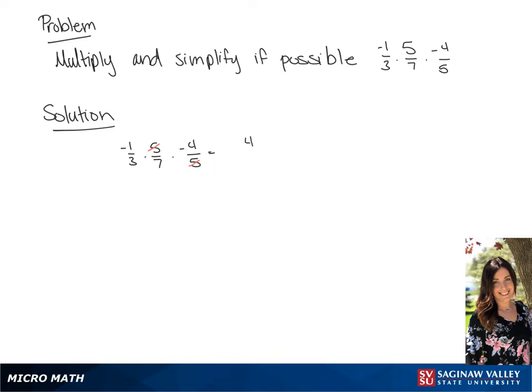So if we multiply, it's negative 1 times 1 times negative 4. And 3 times 7, which is 21, which gives us an answer of 4 over 21.